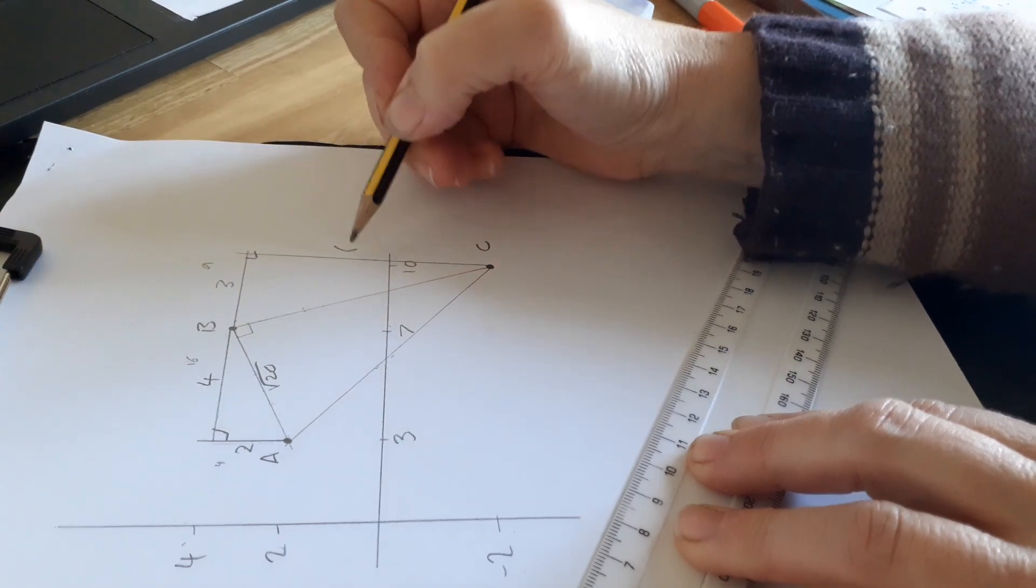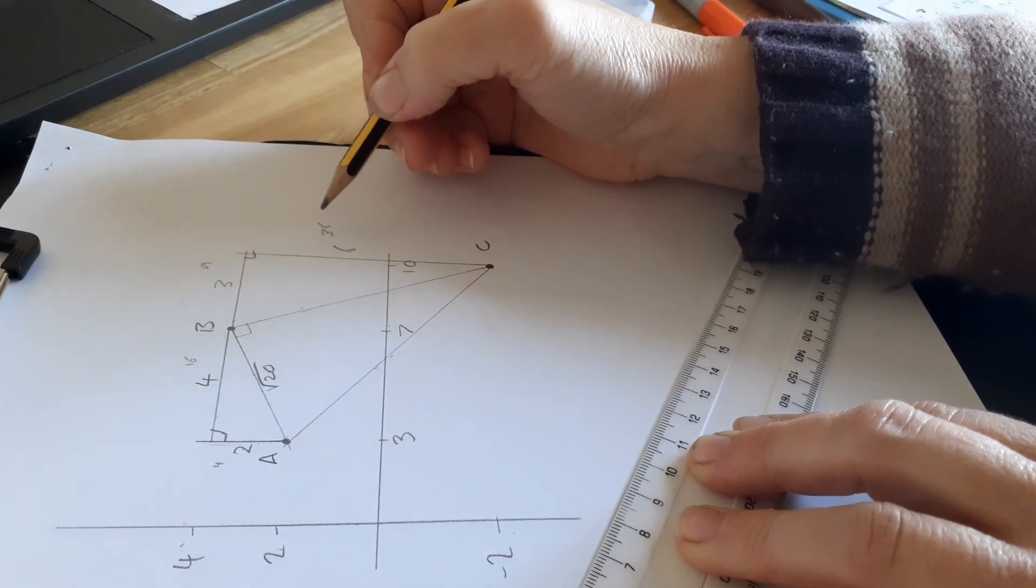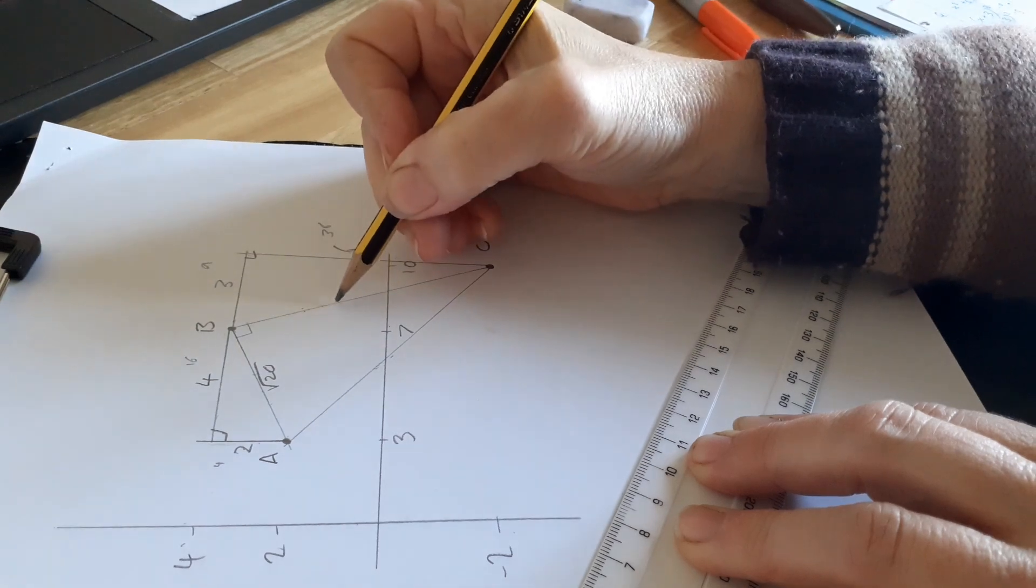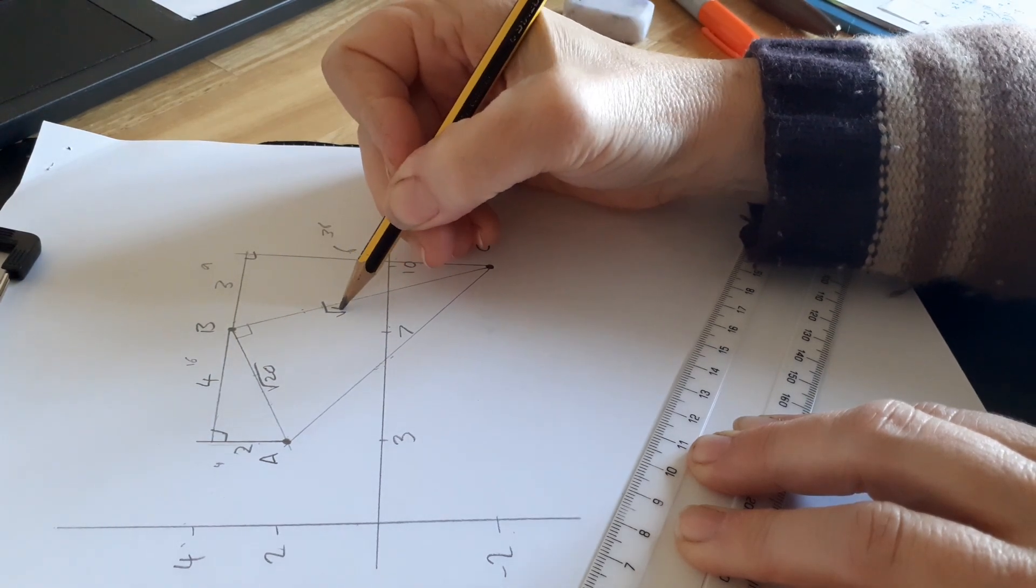If I square that I get 9, if I square that I get 36. If I add these together I get 45. So this side is root 45.